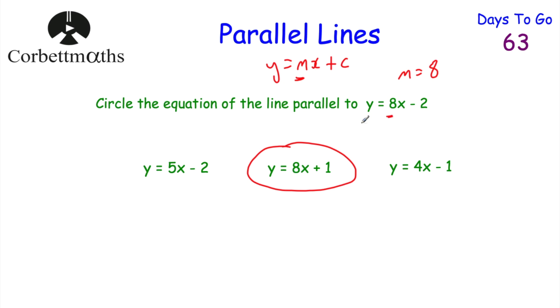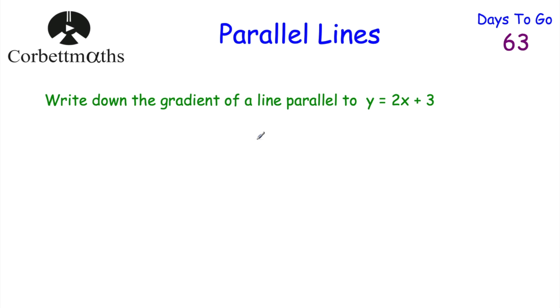These two lines will be parallel — they've got the same gradient. The gradient of y equals 5x minus 2 is 5, and the gradient of y equals 4x minus 1 is 4, so neither of those match the gradient of 8. y equals 8x plus 1 is our answer, and if you got that, well done.